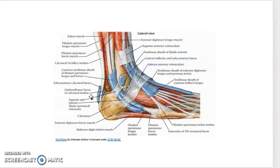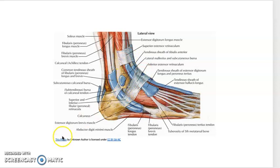Retinaculum is a band of thickened deep fascia around the tendons that holds the tendons in place, as you can see here, here, and here. It is not part of any muscle. The function of retinaculum is mostly to stabilize the tendons. You may see them not only in the ankle, but on our wrist as well.